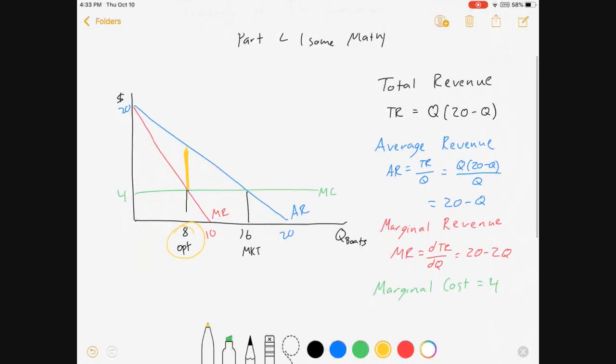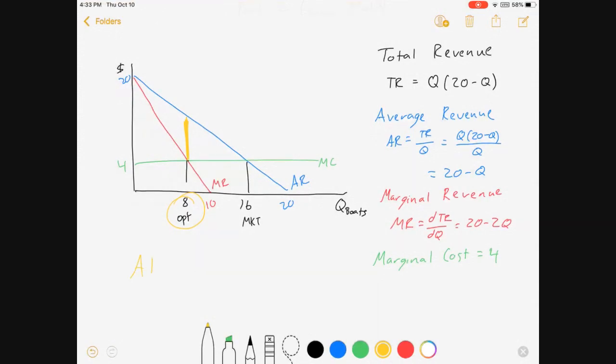So how would I do that? Well, I've got an average revenue curve and it is equal to 20 minus Q. I'll just plug in a Q of 8. Average revenue of 8 is equal to 20 minus 8 equals 12.